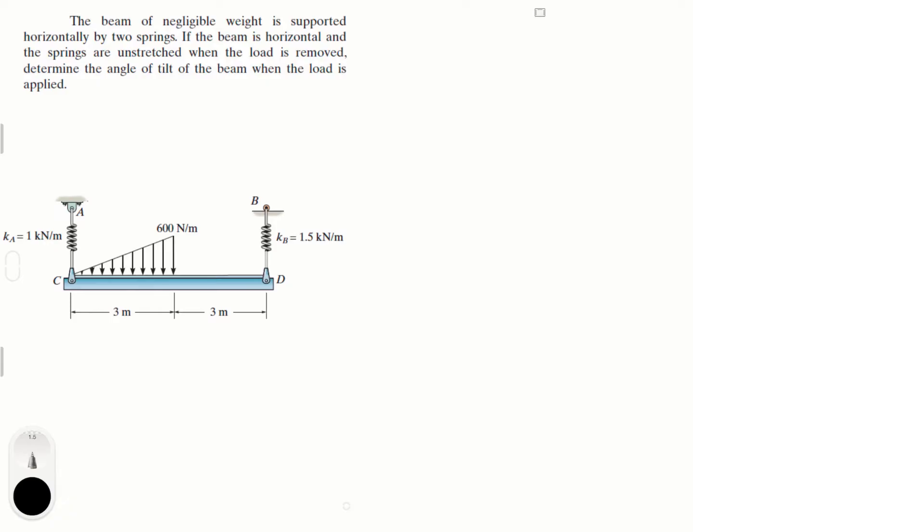Okay, so first of all, whenever you have distributed loads, you try to replace them for equivalent forces to simplify the problem. So you have this 600 newtons per meter force and it has the shape of a triangle, so you know that this is equivalent to, let me erase it to make it simpler.